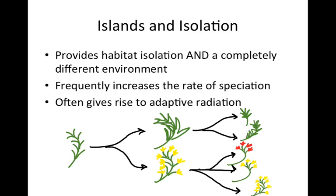Darwin's finches evolved lots of beak types to suit various food sources on the Galapagos. We've seen insects evolve into many different species based on food sources. Plants can change based on their pollinators. There are so many examples of this sort of speciation from moving into a habitat that has new opportunities. With so many factors at play, any example that gets thrown at you, you just have to slowly sit there and break it down into its many parts that could be occurring.